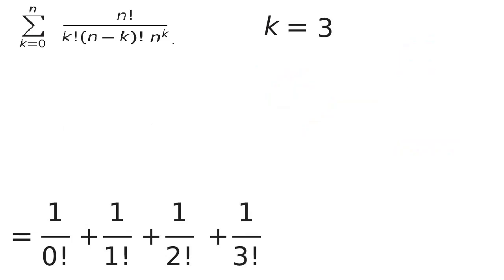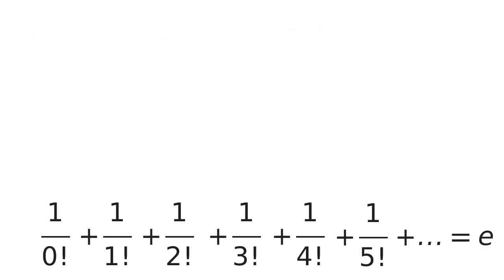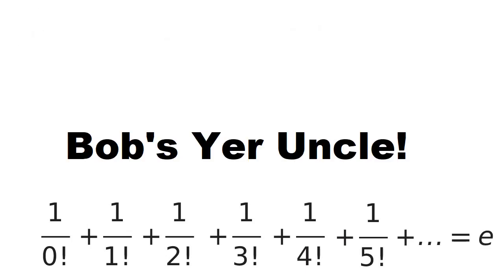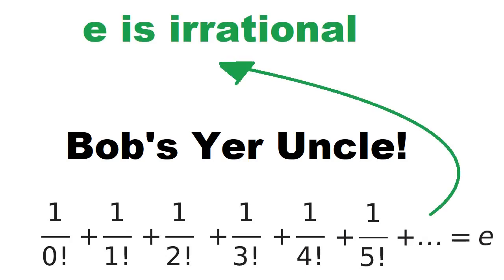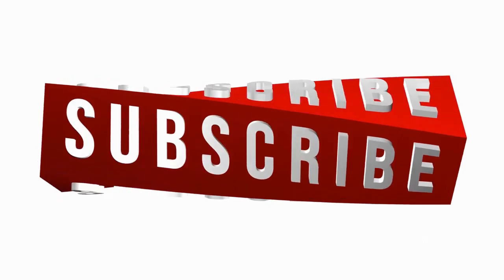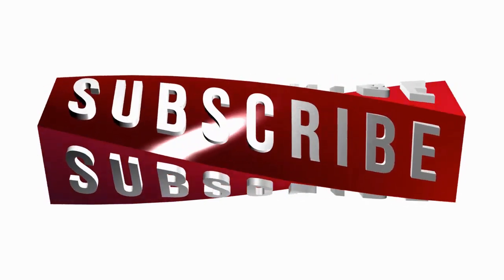We could continue this process to get as close to e as we like, and there's our infinite sum for e. Now while Bob may be our uncle, we can use this sum to prove that e is irrational, but that's another video. So subscribe for more, and cheers.